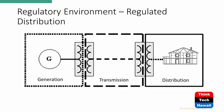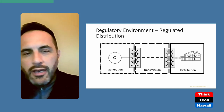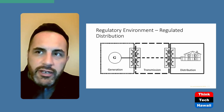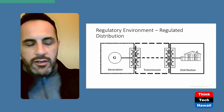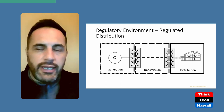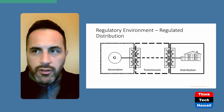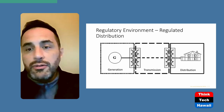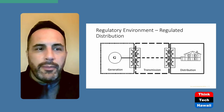The grid is divided into operations and a regulatory environment — generation, transmission, and distribution — with transformers stepping voltage up or down between those segments. On the distribution side, you're going to see more and more distributed energy resources: solar, batteries, and everything happening behind the meter for residential, commercial, and industrial customers. That will be a new age in the industry, but it's still developing.